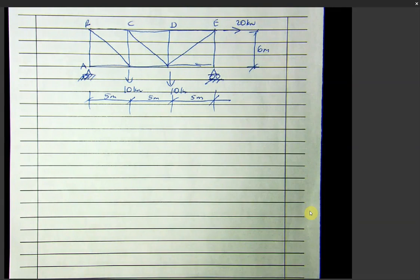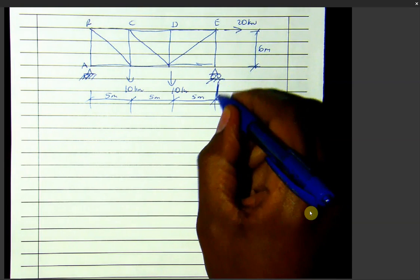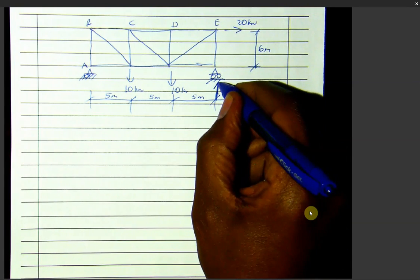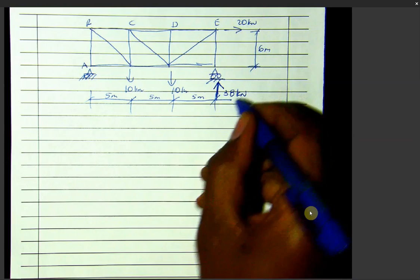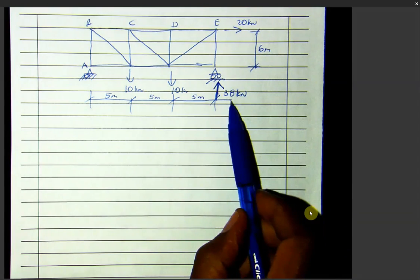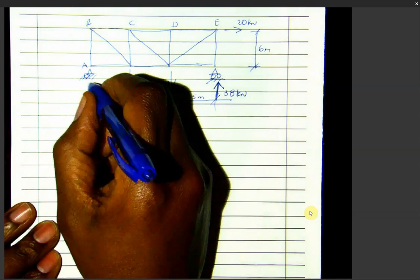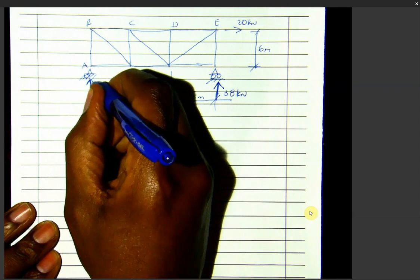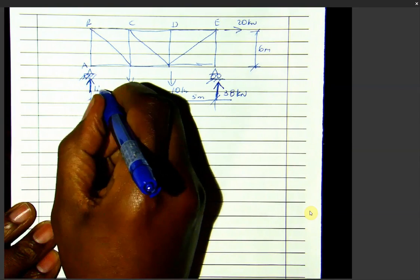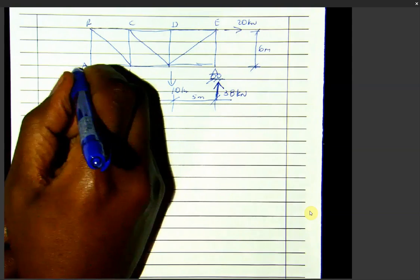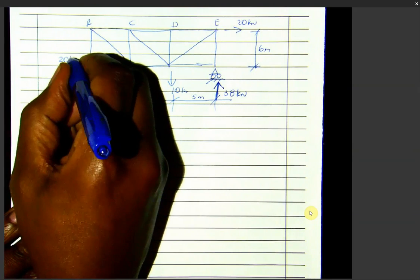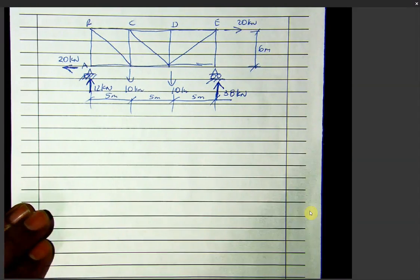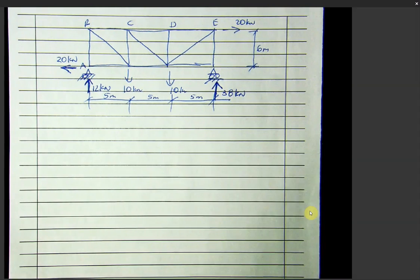The first thing you do is calculate reactions. I'm giving you the reactions now: one reaction is 38 kilonewtons. The pin support has two reactions — 12 kilonewtons vertically and 20 kilonewtons horizontally. The roller gives one reaction. Here are your reactions.